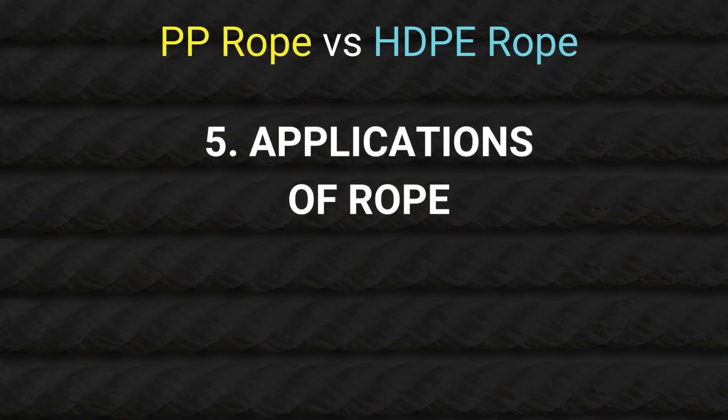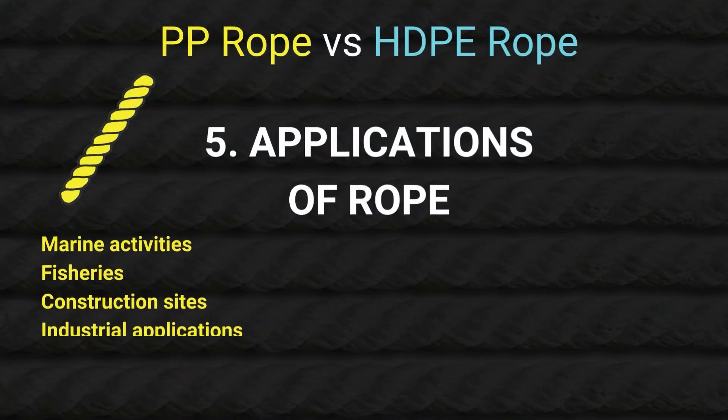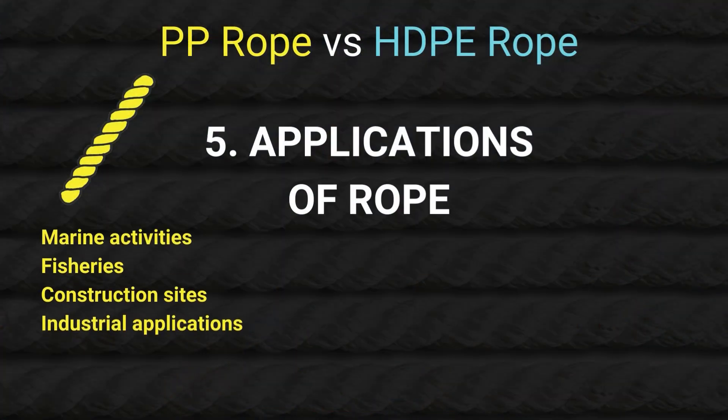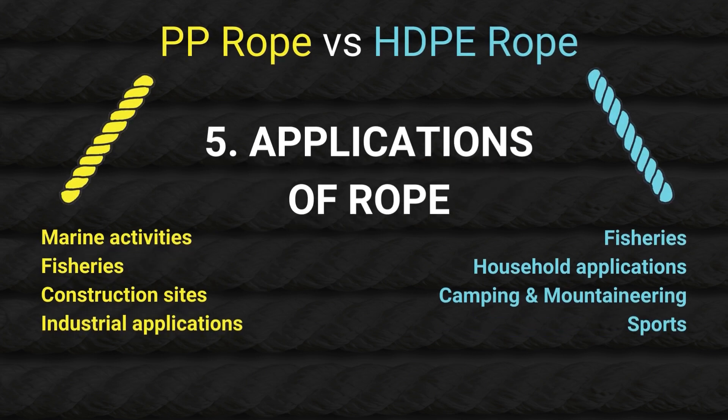The fifth point is application. PP ropes are generally more suitable for marine and fishery applications, though HDPE ropes can be used for small fishing nets. For construction or industrial use where more strength is required, PP ropes are recommended. However, for household use — such as common use in India — HDPE ropes provide sufficient strength.